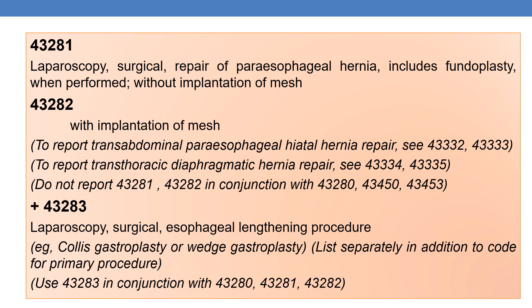The next CPT is 43281. It deals with laparoscopy, surgical, repair of paraesophageal hernia, including fundoplasty when performed, without implantation of mesh. If the procedure is performed with implantation of mesh, the CPT is 43282. To report transabdominal paraesophageal hiatal hernia repair, see 43332 and 43333. To report transthoracic diaphragmatic hernia repair, see 43334 and 43335.